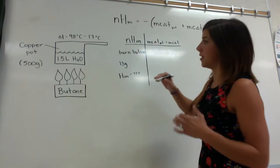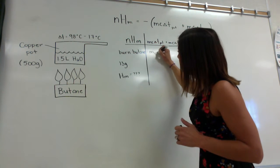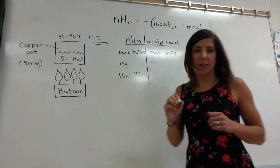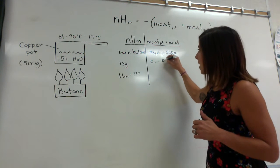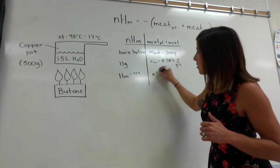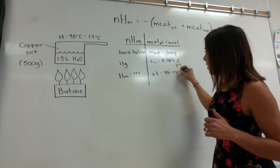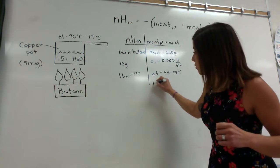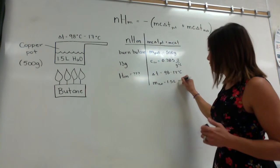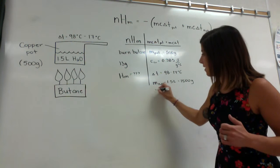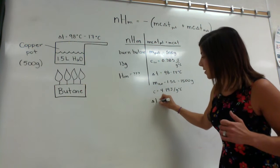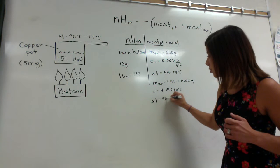I'm going to use grams because it's a lot easier. The mass of the pot is 500 grams. The heat capacity of a copper pot is 0.385 joules per gram degree Celsius. The temperature change is from 17 to 98 degrees Celsius. You also have to take into account the mass of the water: 1.5 liters equals 1.5 kilograms, which equals 1,500 grams. The heat capacity of water is 4.19 joules per gram degree Celsius, and the temperature change is the same — it may take longer, but the delta T is the same.